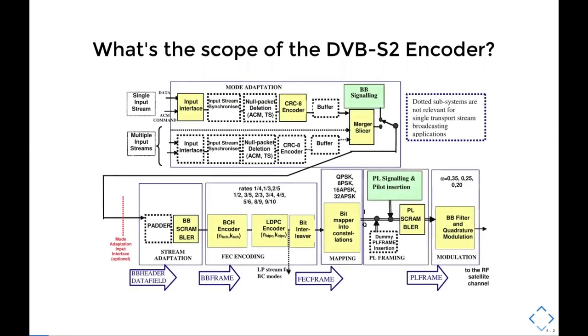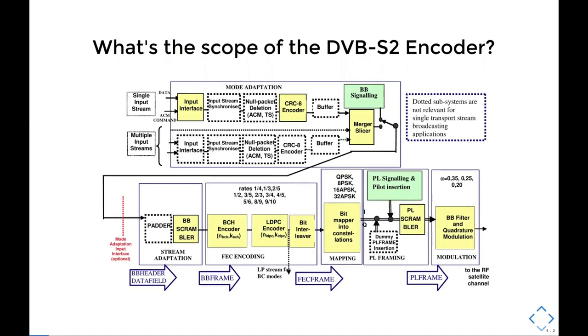So what is the scope? This is the function block diagram as it appears in the DVB-S2 spec, and I'm gonna start at the end of this diagram. Here we have the interface to the RF satellite channel. Everything after this point is platform-dependent and ultimately depends on the interface to the RF transceivers, so it's out of our scope here. The current implementation starts with the stream adaptation subsystem here, and this effectively delineates the scope.